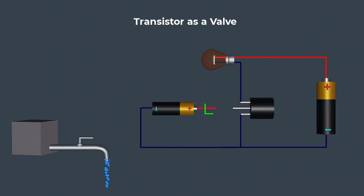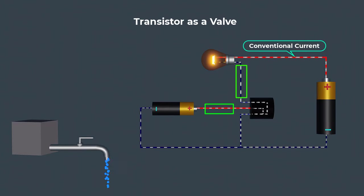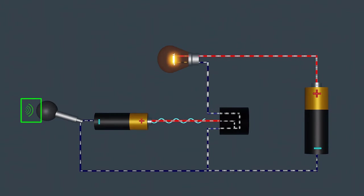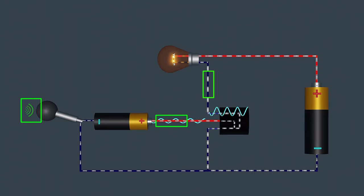Similarly, the base current controls the collector current in a transistor. Just as the small movement of the valve knob can control a much larger flow of water, the small base current controls a larger collector current. Changes in the base current result in proportional changes in the collector current, leading to signal amplification.